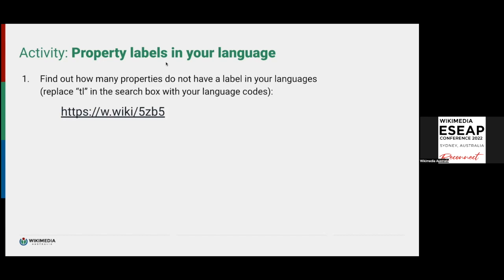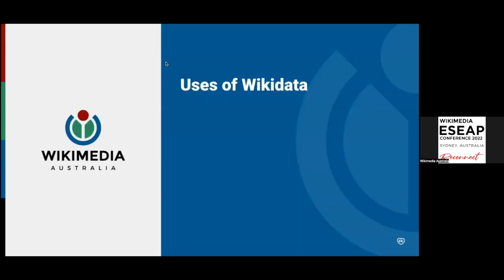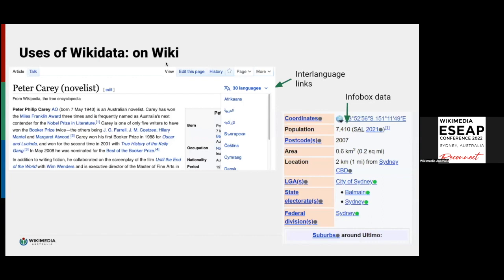English is an exception — it's one of the only languages where every property is translated. Other major languages like Spanish are only about half translated. So what do we do with Wikidata? If you're a Wikipedian you will have seen Wikidata used already, possibly without knowing it.